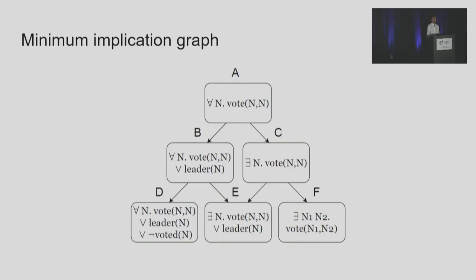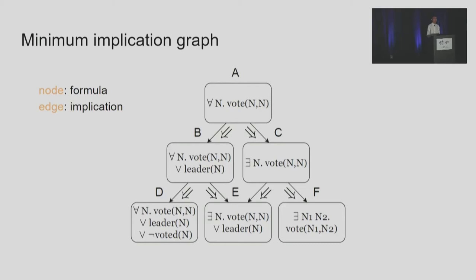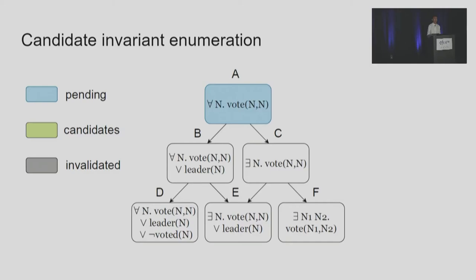To systematically capture these implication relations, we propose the minimum implication graph. We show a fraction of the graph for the simple consensus protocol: each node represents a formula and each edge represents an implication relation between two formulas. One can verify that along each edge, the predecessor implies the successor. In the paper, we establish important theoretical properties of the minimum implication graph, and also provide a sound and complete algorithm to construct the graph given the protocol and the search space.